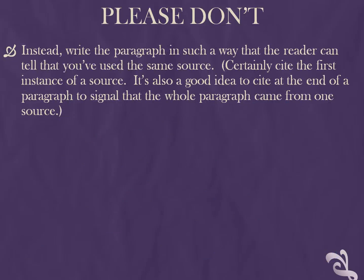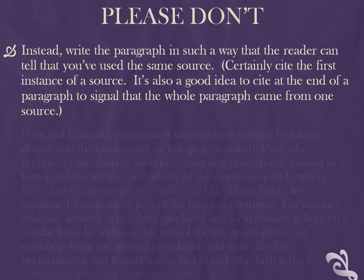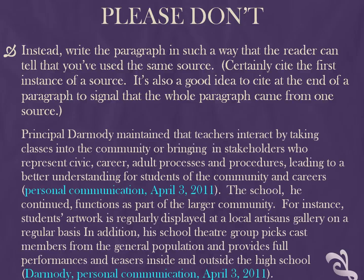Instead, try writing your sentences in such a way as to show the reader that all your information is from the same place. Of course, you should definitely cite the first sentence that comes from an author. It's also a good idea to cite the last sentence from that source. This book-ending technique isn't prescribed by APA, but it is a useful way to reduce the number of citations while still clearly conveying to your reader where your information has come from. Writing this way does require more effort and attention to how your sentences fit together, but all good writing requires this kind of conscientious thought and planning.